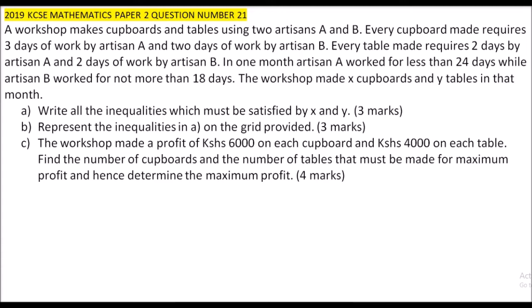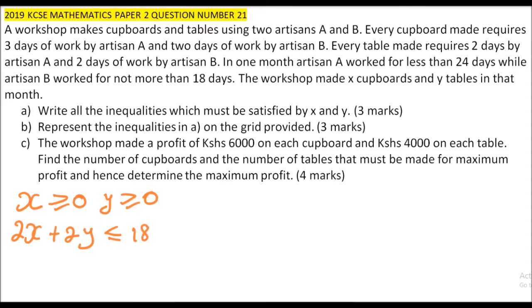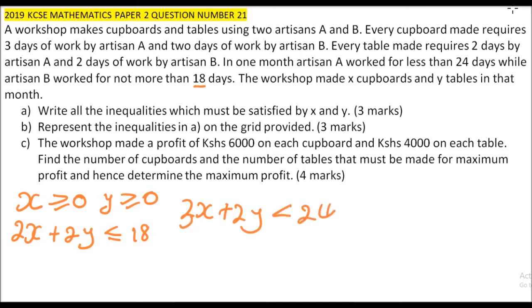Part (a): Write all the inequalities which must be satisfied by x and y. First, x ≥ 0 and y ≥ 0. Then we form two more inequalities. For artisan B: 2x + 2y ≤ 18. For artisan A: 3x + 2y < 24, representing the number of days worked by each artisan.